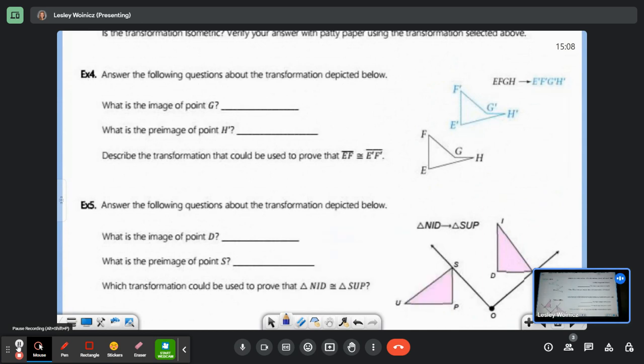We have another transformation. It's saying that EFGH maps to E prime F prime G prime H prime. What is the image of point G? So the image is like after the transformation. This is after, and then G is the pre-image. Write that down. This is before. So I thought I heard it. G what? G prime. So it's point G prime. Don't forget to write out the word point. What is the pre-image of point H prime? Point H. Don't forget to write the word point.